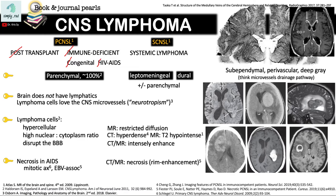Primary CNS Lymphoma presents with parenchyma lesions in about 100% of cases, while secondary CNS Lymphoma presents with leptomeningeal or dural abnormalities. In secondary CNS Lymphoma, there may be involvement of parenchyma, but it is rare to have parenchyma lesions in the absence of meningeal involvement.